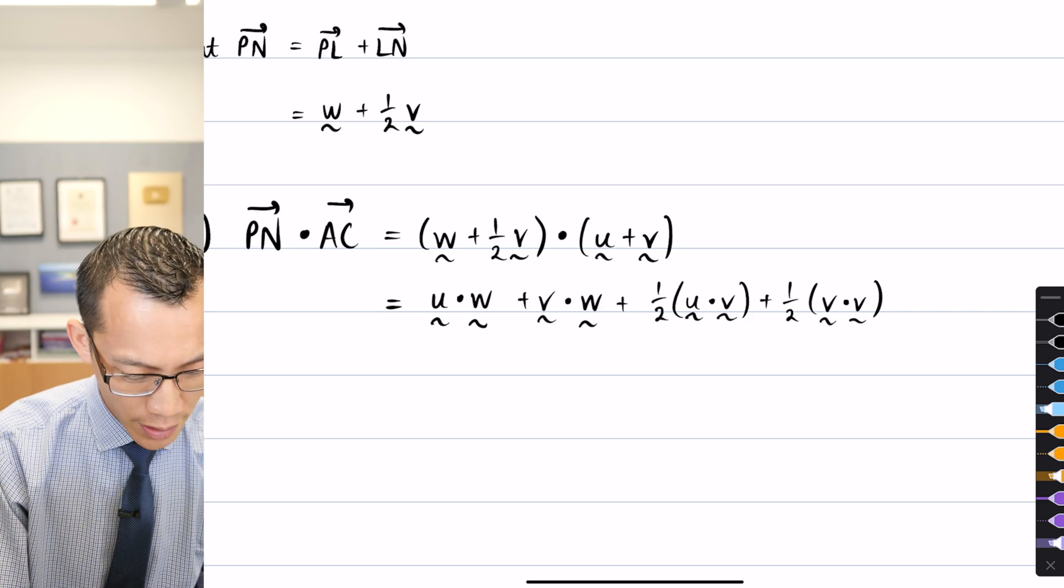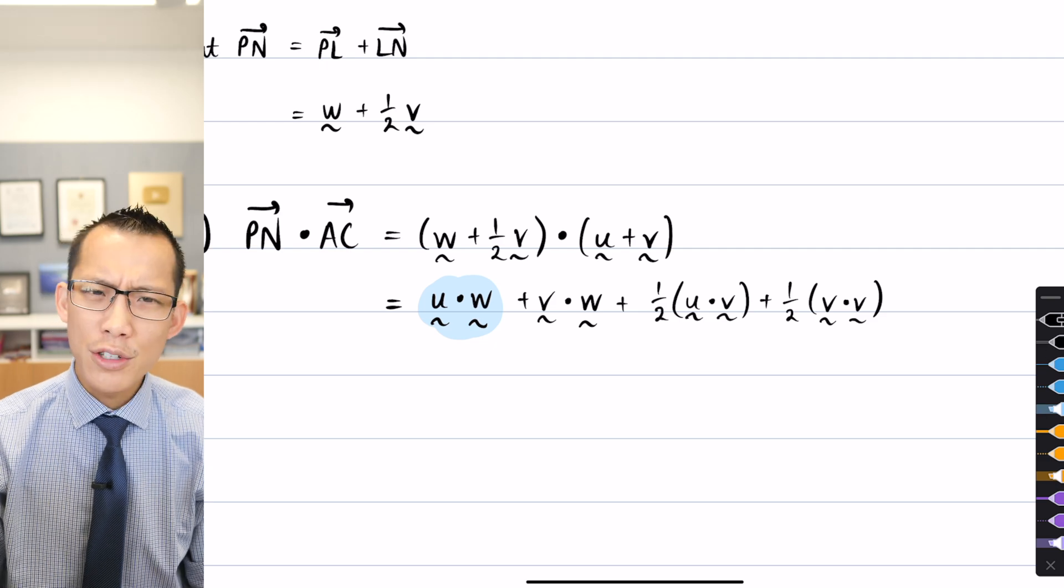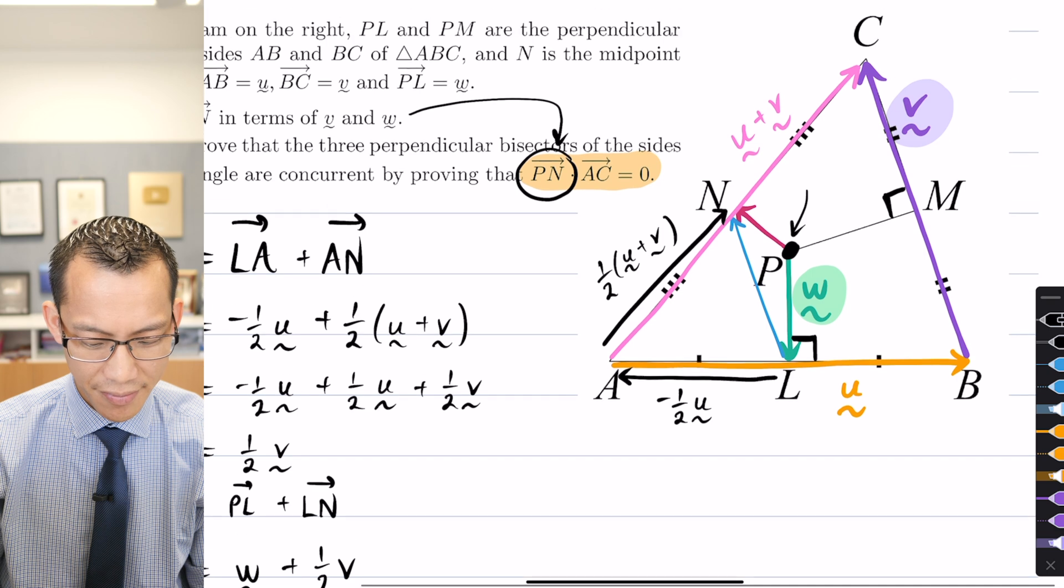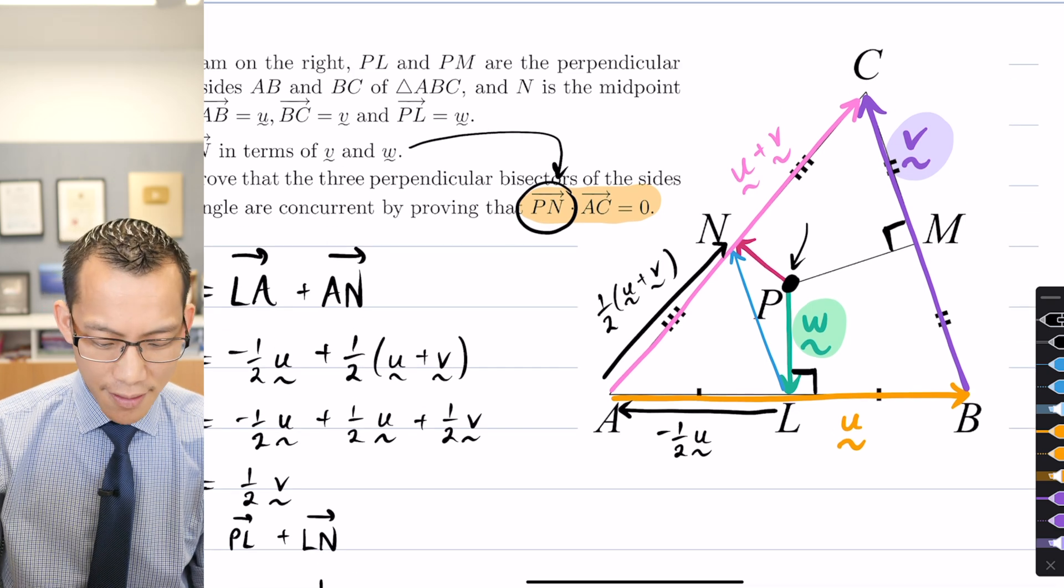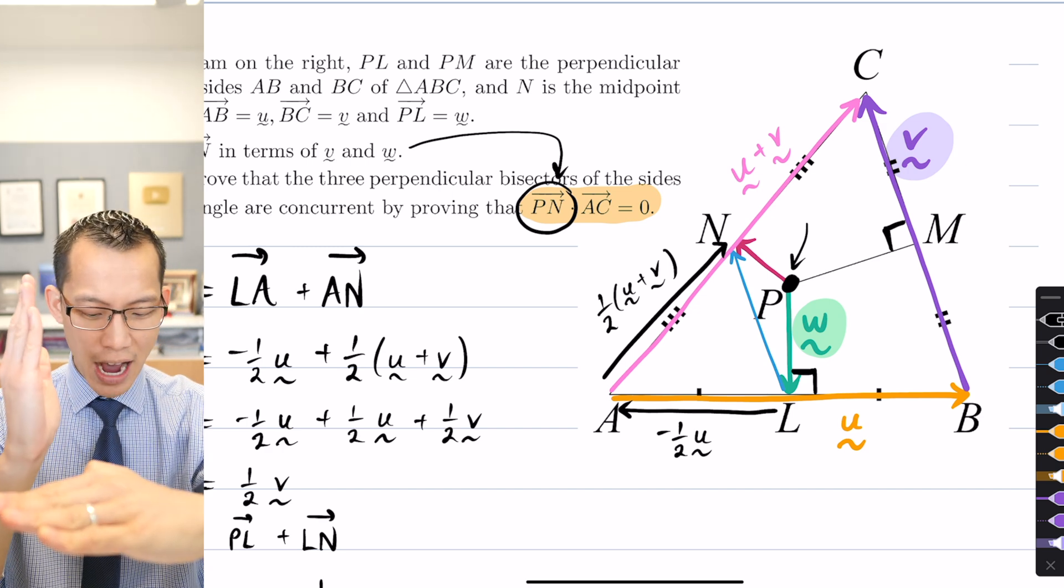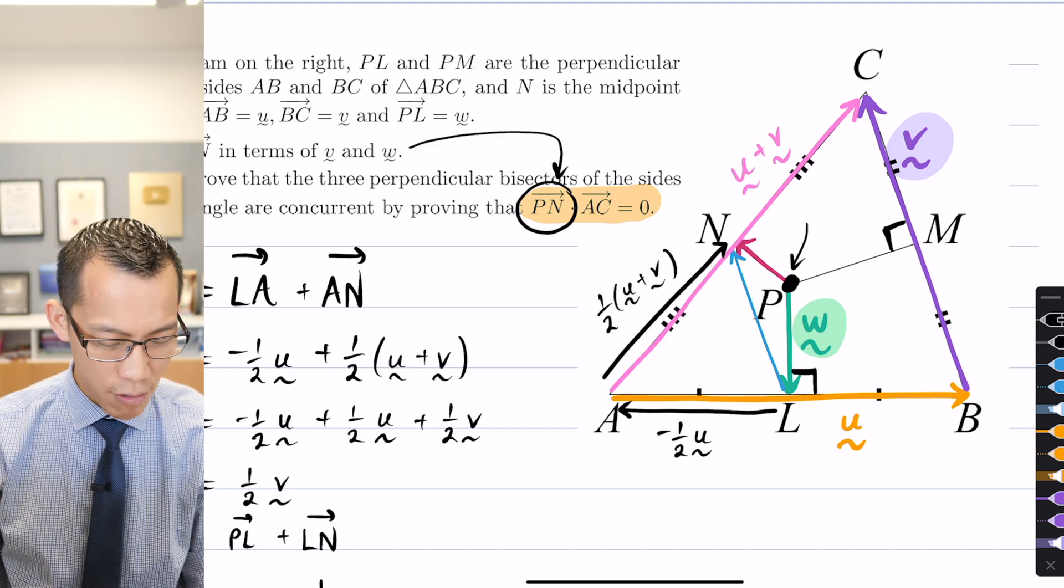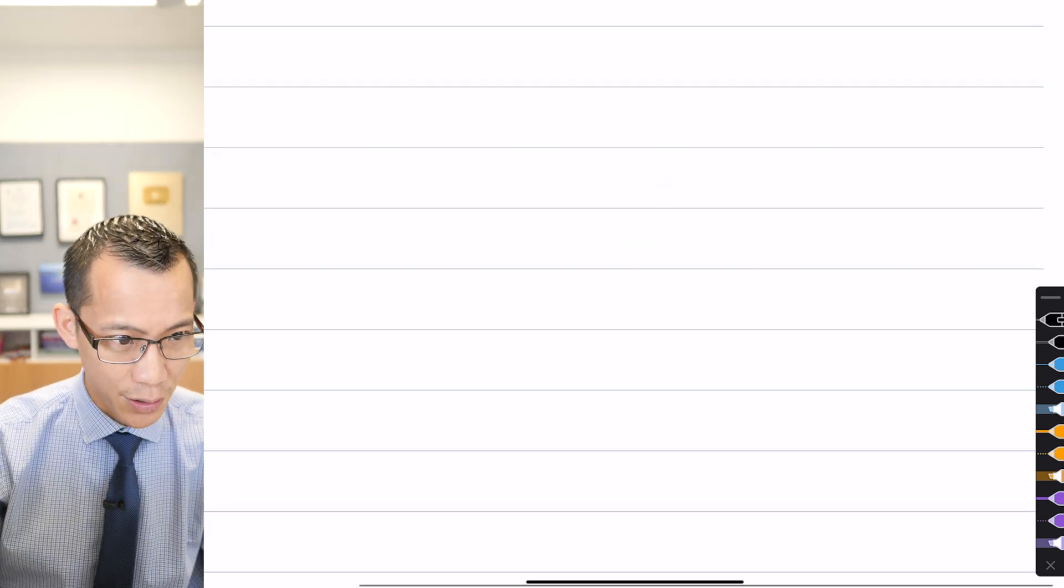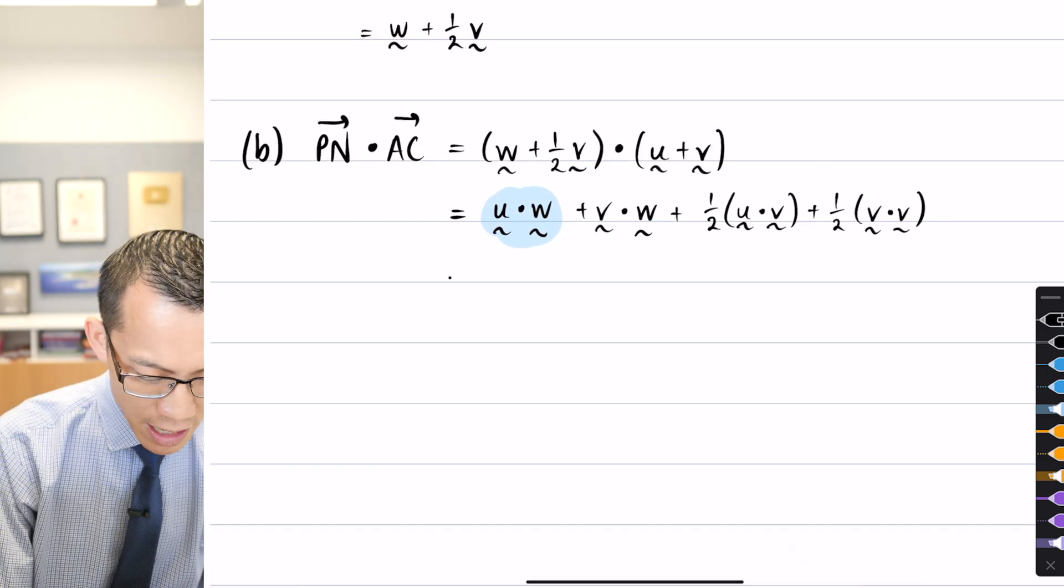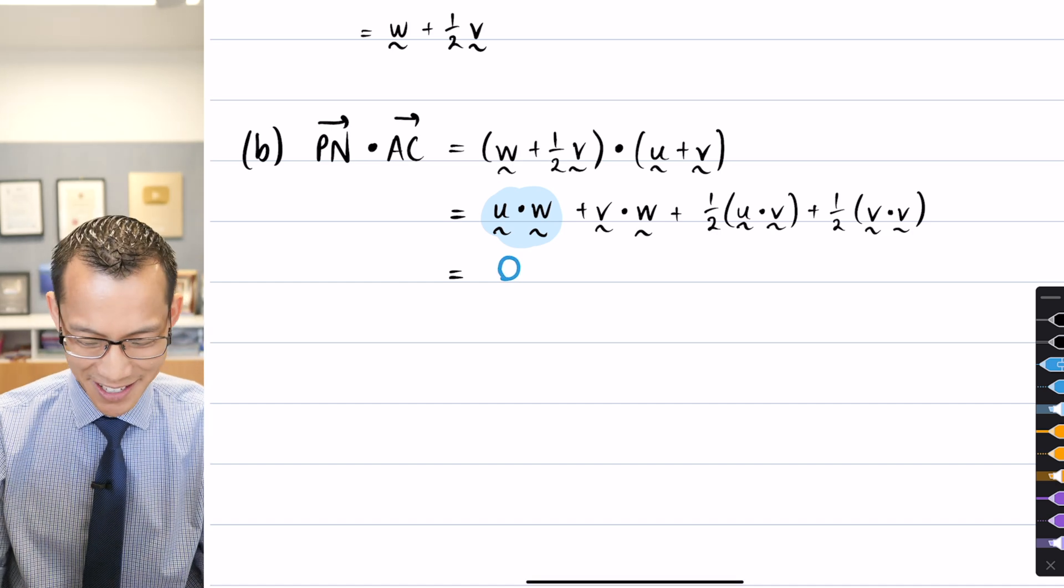The first clue I'm going to give you is have a look at this first vector, u dot w. Where is u dot w or u and w rather? Where are they on our diagram? Very good. Yeah. So A, B and P, L, which are represented by u and w, they are defined as perpendicular. So their dot product is zero. That's really good. So I'm going to go down to here. I'm going to say that's equal to, well, that's a start. It's zero. That's one less thing to worry about.